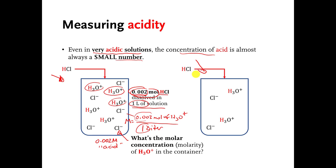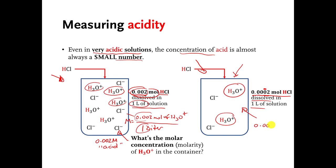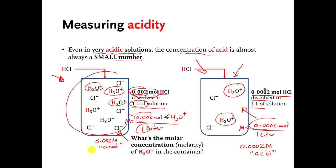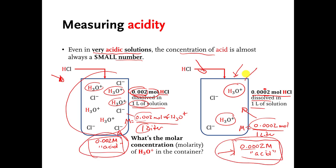In the container on the right, I dissolved only 0.0002 moles of HCl — you can see there's an extra zero — into one liter of solution. So the molar concentration of H3O plus on the right is 0.0002 moles divided by one liter, giving 0.0002 molar. This is obviously a smaller number, so the concentration of acid in the right container is lower — it's less acidic.